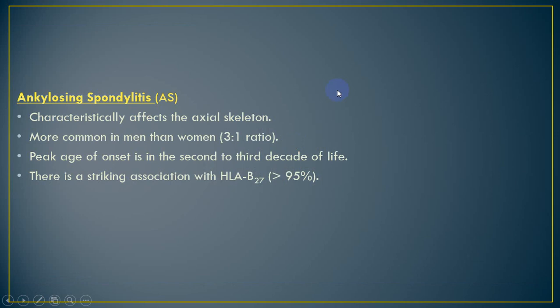Ankylosing Spondylitis characteristically affects the axial joint — meaning the spine. It is more common in men, with a male-to-female ratio of 3 to 1 (some sources say 5 to 1). Peak age of onset is the 2nd to 3rd decade of life. There is a high association with HLA-B27; almost 95% of patients with ankylosing spondylitis are HLA-B27 positive.